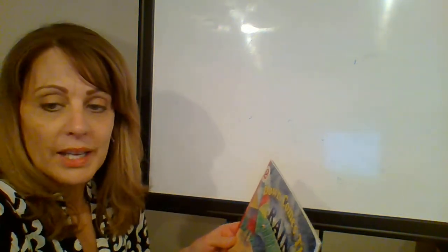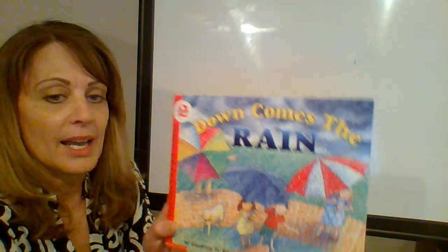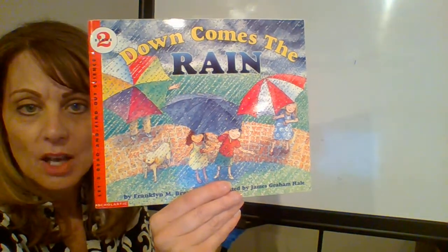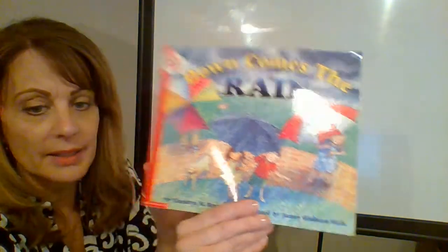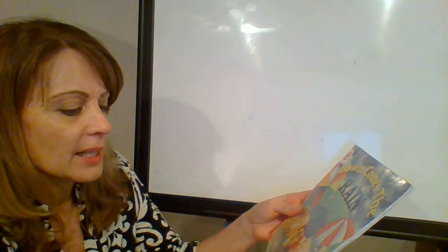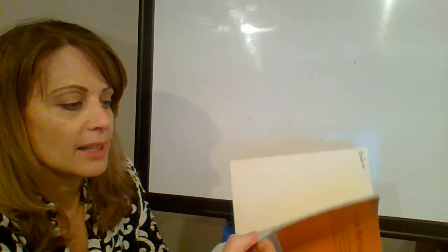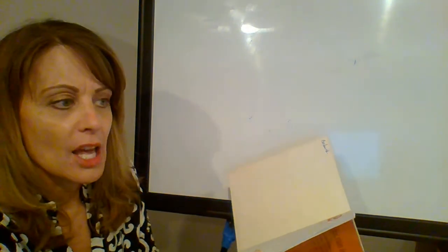Welcome back. We have been working on the water cycle and I found another book called Down Comes the Rain. This is by Franklin M. Branley and it's illustrated by James Graham Hale. See if you can tell the water cycle, okay?